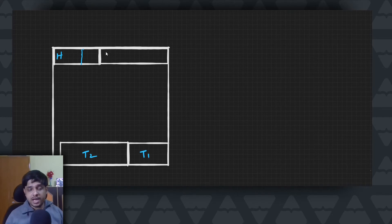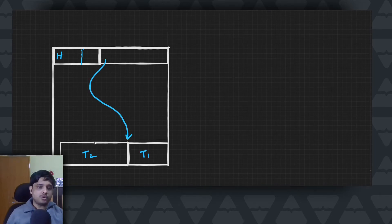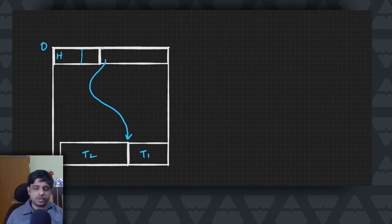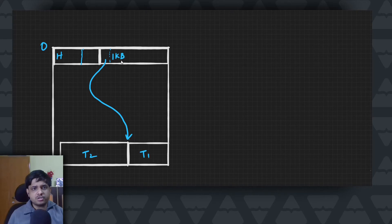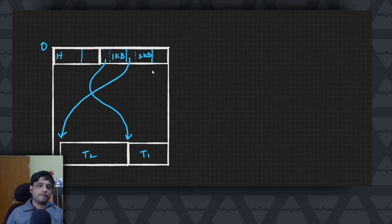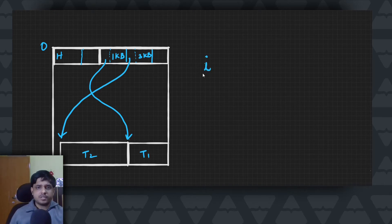After the header, we have something called a slot array. In the slot array we store the offset to each tuple — the offset meaning the byte position from the start of the page. So position 0 is the start of the page, and we record where T1 begins. We also store the length of each tuple in the slot entry. For example, T1 might be 1 kilobyte, so we store the offset and length 1 KB. Then for T2 we store its offset and length — say 3 kilobytes.